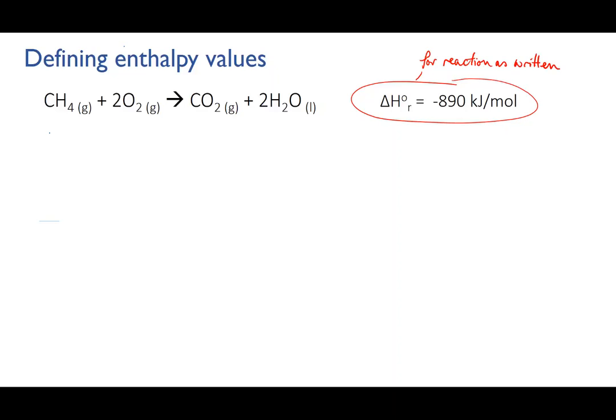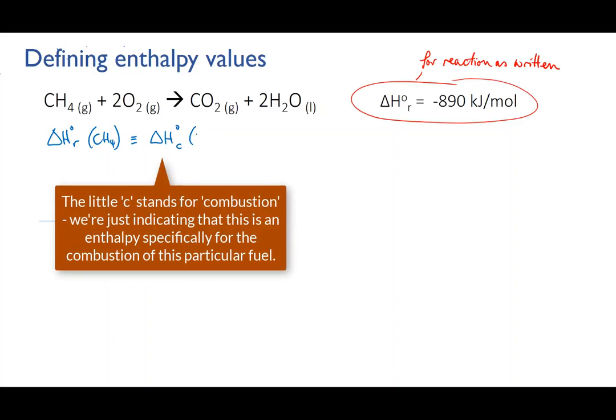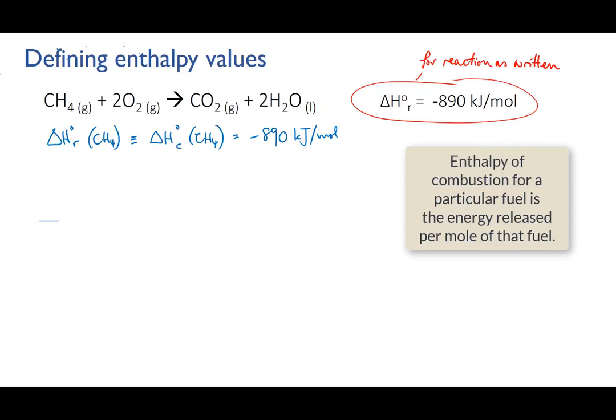That means the enthalpy of combustion of methane has the same value. Remember this was the enthalpy of reaction. The enthalpy of combustion of methane is essentially the same thing. We burnt one mole of methane and got 890 kilojoules out, so delta H combustion of methane is minus 890 kilojoules per mole. Note that enthalpies of combustion are defined for one mole of a specific fuel.